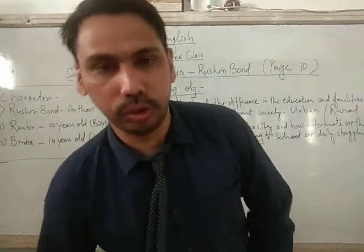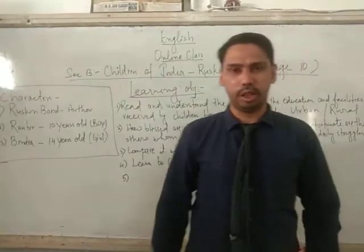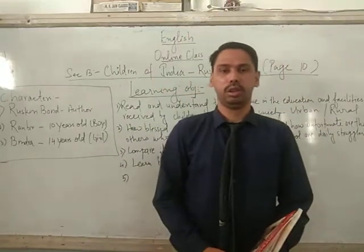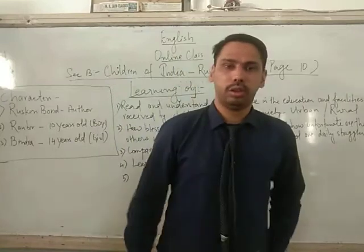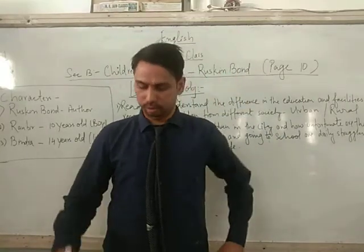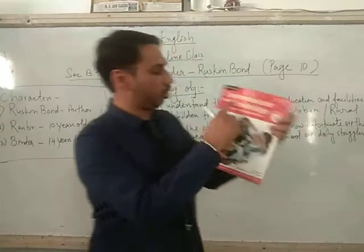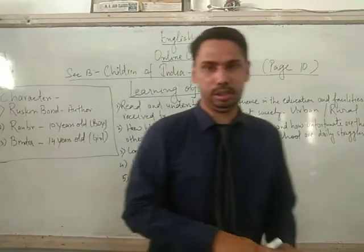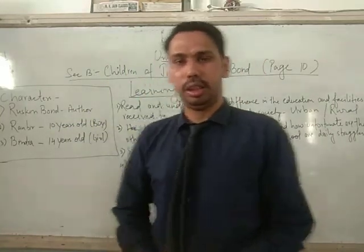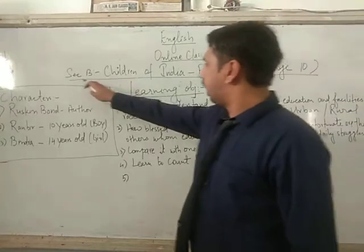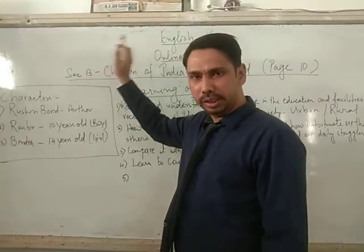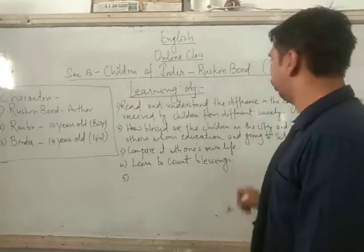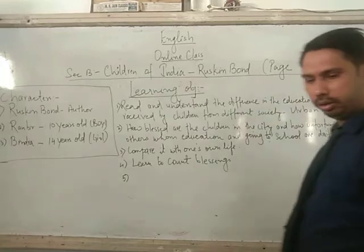Hello and welcome, dear children. Good morning and welcome to English online class. Today we are going to start with a new lesson from your book, Communicate with Cambridge, Course Book 8, page number 10. The name of the chapter — we will start with Unit 1, Section B: Children of India, by author Ruskin Bond, page number 10.